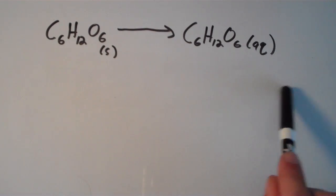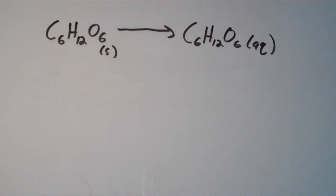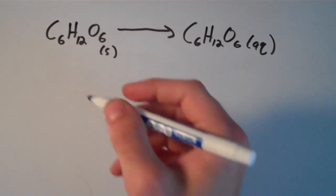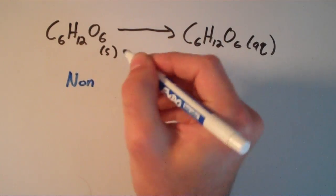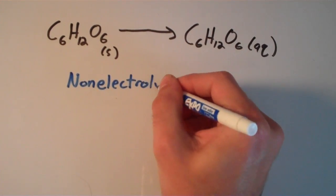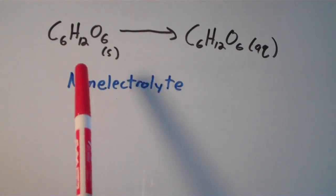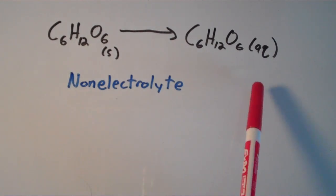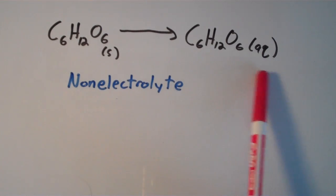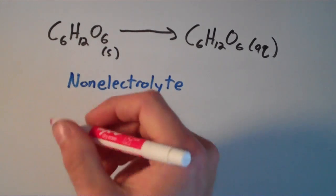Notice that our product side of the equation, our right-hand side, doesn't have any ions in it. An electrolyte has ions, so this is a non-electrolyte. This doesn't conduct any electricity at all. The process of a molecular compound such as glucose dissolving in water to become just that molecular compound aqueous, we call that molecular dissolution.